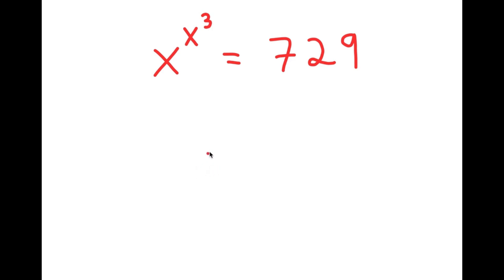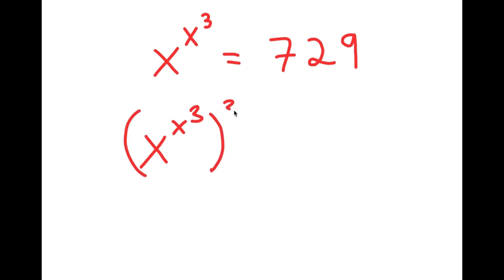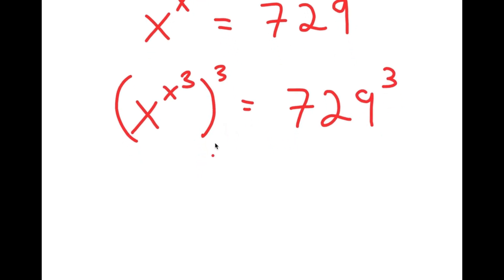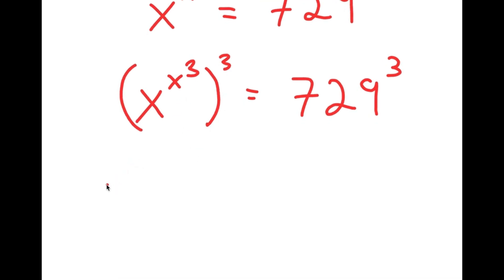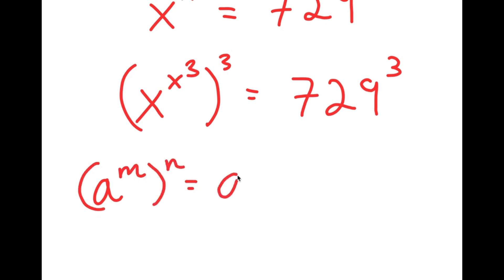To solve this, what I'm first going to do is take the power of 3 on both sides. So I get x to the power of x to the power of 3, to the power of 3, is equal to 729 to the power of 3. Now, if I have something in the form a to the power of m to the power of n, this is the same thing as a to the power of m times n.